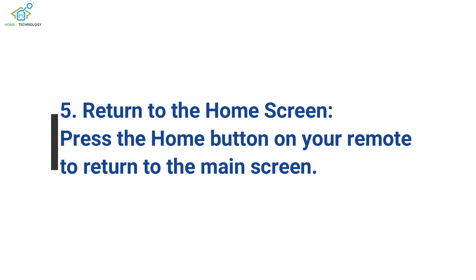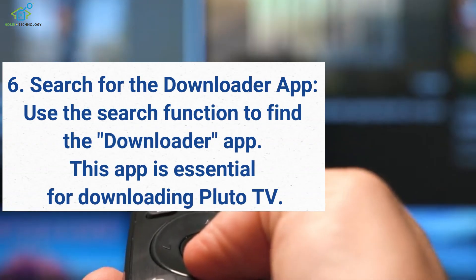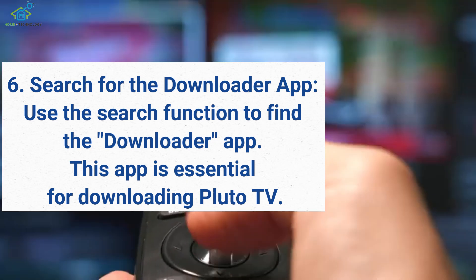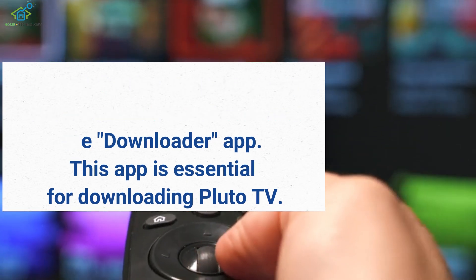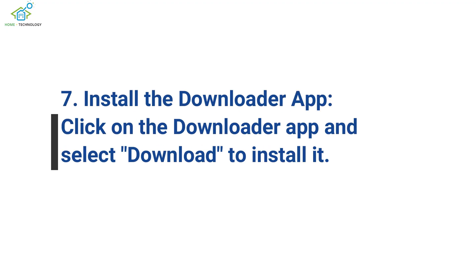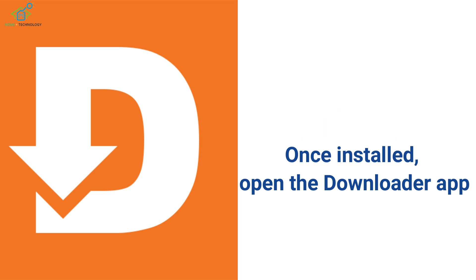Step 5: Return to the Home screen. Press the Home button on your remote to return to the main screen. Step 6: Search for the Downloader app. Use the search function to find the Downloader app. This app is essential for downloading Pluto TV. Step 7: Install the Downloader app. Click on the Downloader app and select Download to install it.